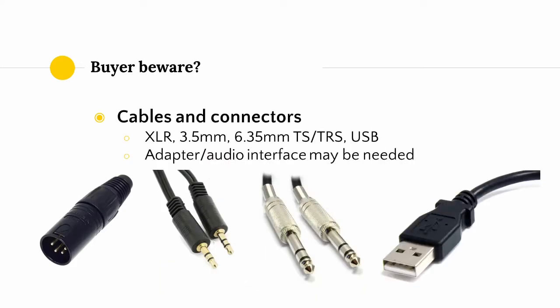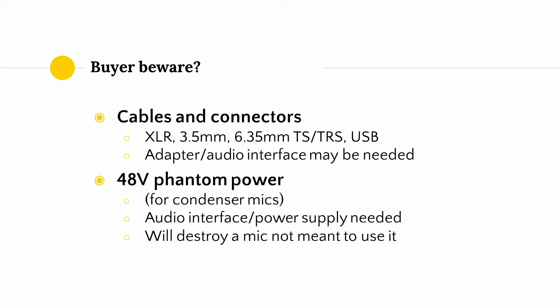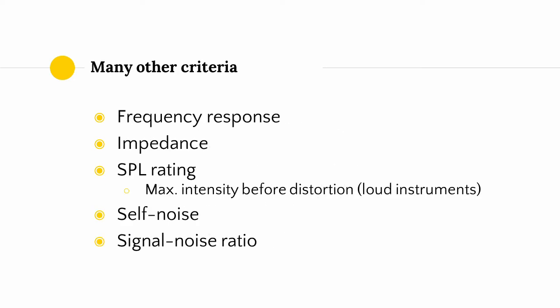Omnidirectional mics accept sounds from all directions, which can be useful for recording ambiences — like the ambient sound of a city or a desert — or as room mics for drum kits to give the drums a bigger sense of space. Multi-patterned microphones offer multiple settings for selecting different polar patterns. Now, a buyer beware section: you need to care about cables and connectors. Mics might use XLR cable, 3.5mm or 6.35mm TS or TRS cable, or some just use USB. Most computers will only out-of-the-box accept 3.5mm or USB, so you'll need an adapter or an audio interface for any other kind of cable. Some condenser microphones require 48V phantom power to amplify the signal in their internal components — requiring an external audio interface or power supply. Trying to run phantom power through a mic not designed for it will most likely damage it. Other criteria include frequency response, impedance, SPL rating — the maximum intensity before distorting, which is important for micing loud instruments like drums — self-noise, and signal-to-noise ratio.